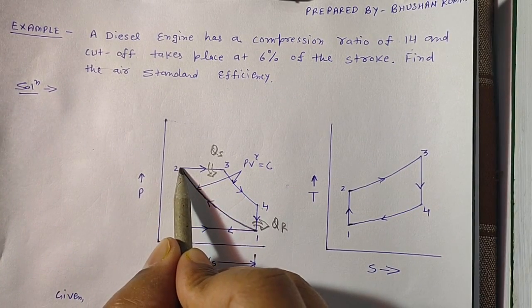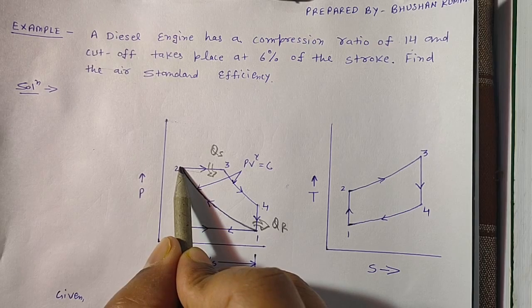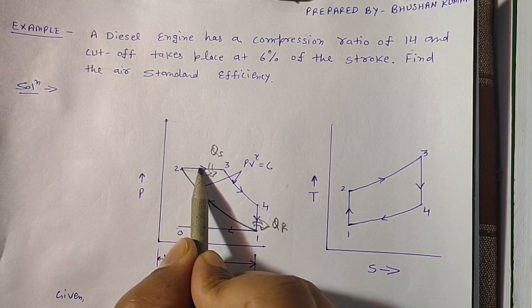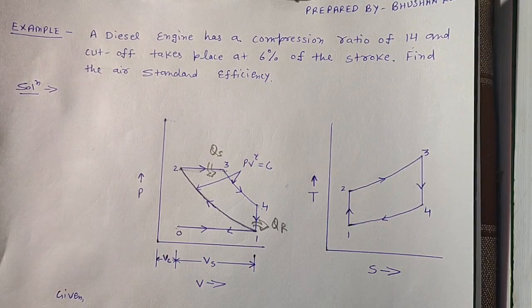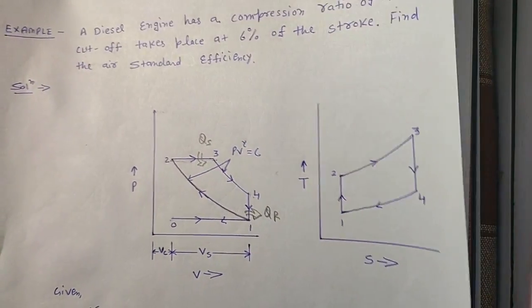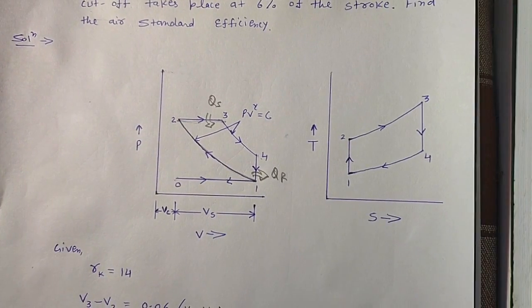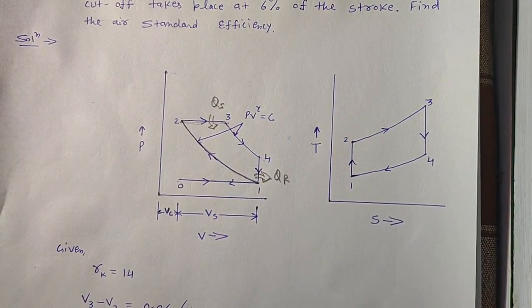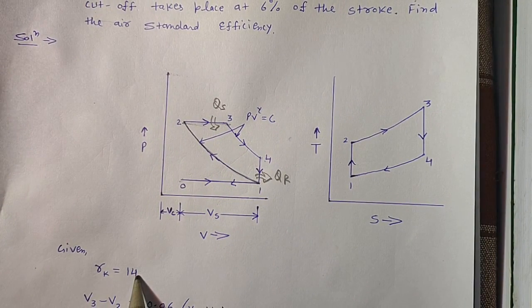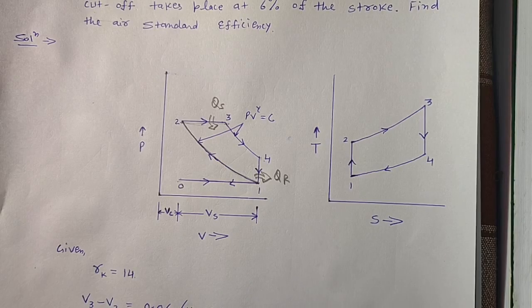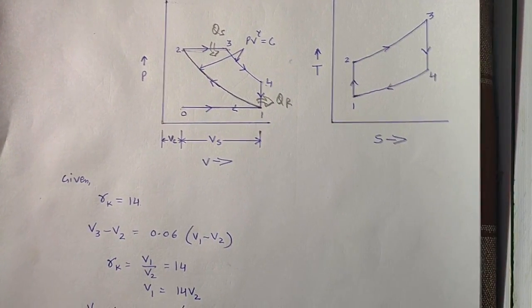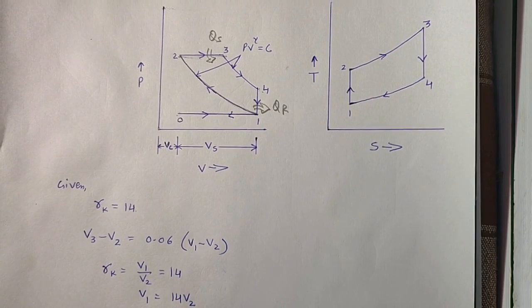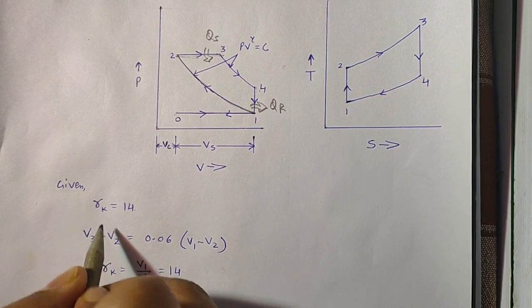In the diesel cycle, we are supplying heat at constant pressure. The compression ratio RK is given as 14. Now we need to use the statement that is given.